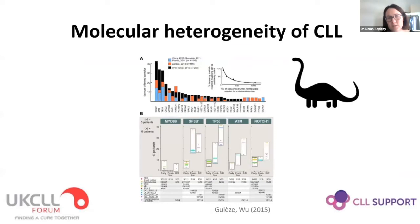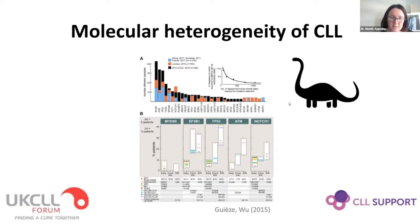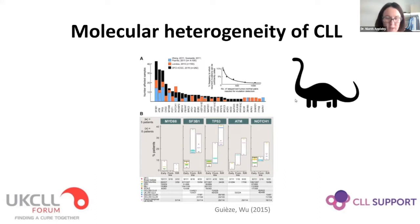CLL is clinically heterogeneous — some patients have indolent disease for decades, while others progress within a short period of time. At a somatic mutation level, it is also molecularly heterogeneous: a small number of mutations occur relatively frequently, up to about a third of patients, and then there is an increasingly long tail of less frequent mutations occurring in fewer and fewer patients. This creates a long tail problem when picking genes for a targeted sequencing panel — wherever you draw the line, you miss an important chunk of less frequent mutations that may carry significant prognostic effects.